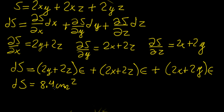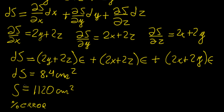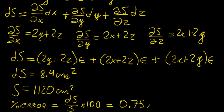So 8.4 cm² is the greatest amount of error in the measurement of that surface area, given the uncertainty in the lengths of the sides of the box. Now if we want to quantify this with respect to the total surface area, we can take the ratio — that gives us the percentage error. The total surface area from our formula is around 1,120 centimeters squared, so the percentage error is ds over s times 100, which gives us approximately 0.75%.